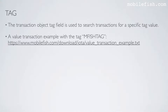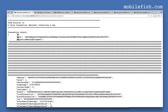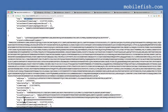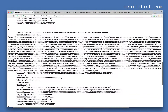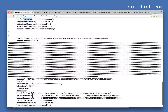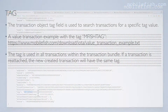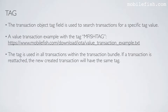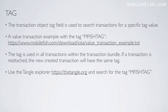Here is a value transaction example with the mfish tag. This is the value transaction. The transaction bundle consists of four transactions. This is the first transaction and here you see the tag mfish tag. The tag is used in all transactions within the transaction bundle. If a transaction is reattached the newly created transaction will have the same tag. Use the tangle explorer tangle.org and search for the tag mfish tag.